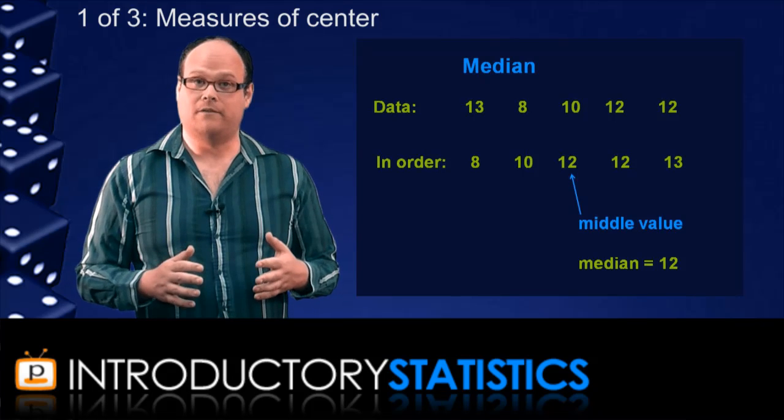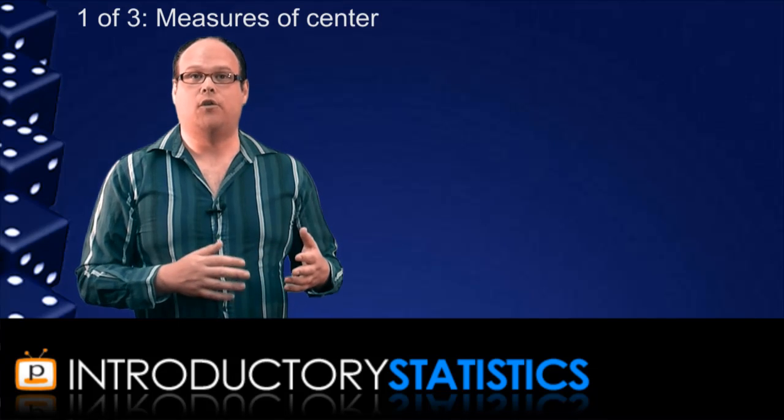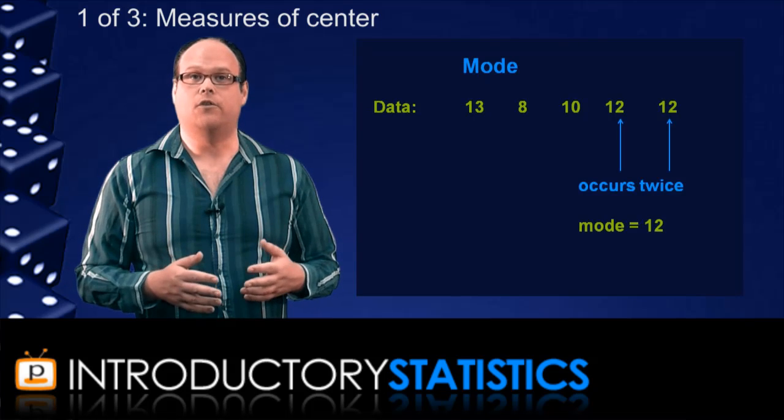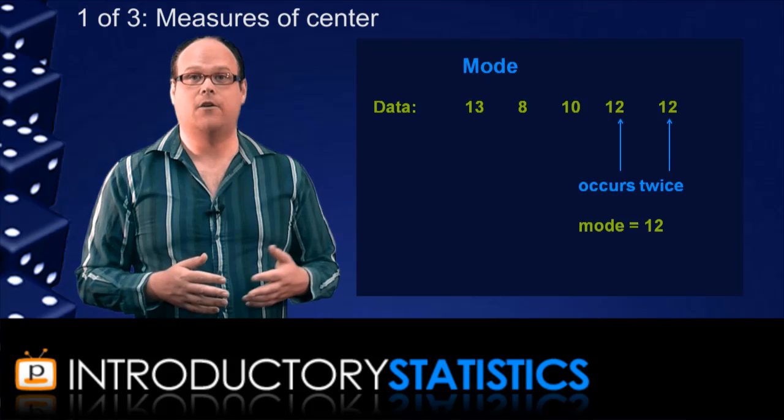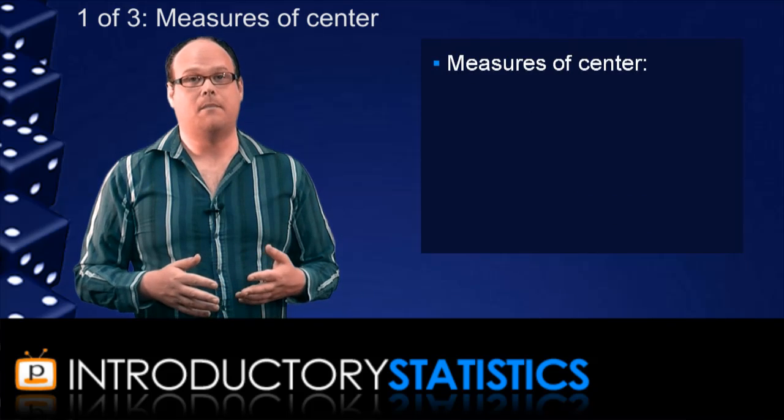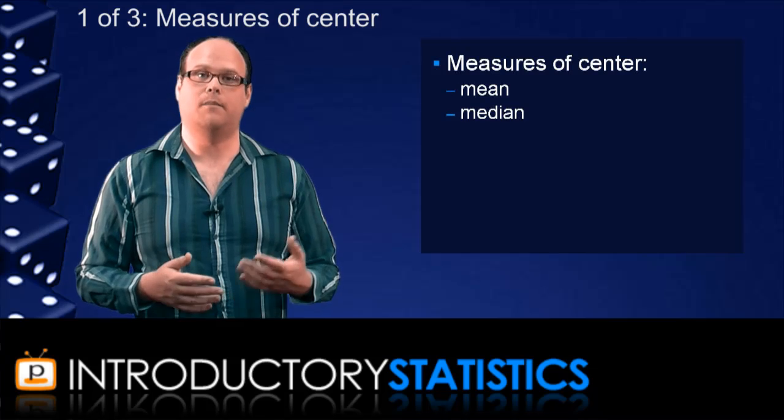The final measure of center we have is the mode. And this is the most commonly occurring data value in the set. In the data set of five values, the value 12 occurred twice, which is more than any other value. So the mode in this case is 12. So that's the three main measures of center: the mean, the median and the mode.